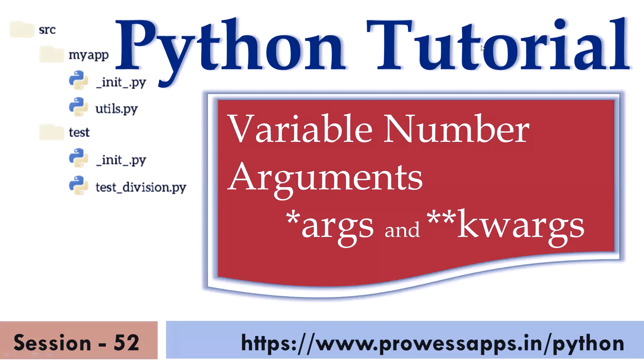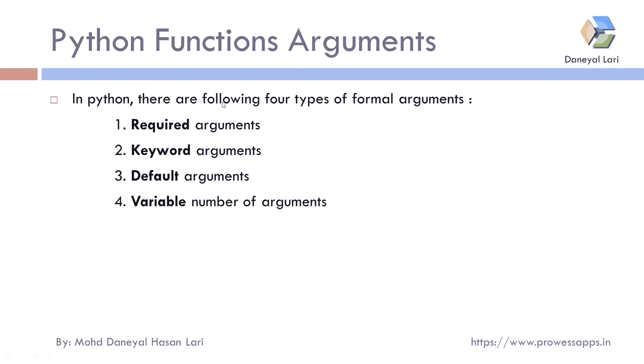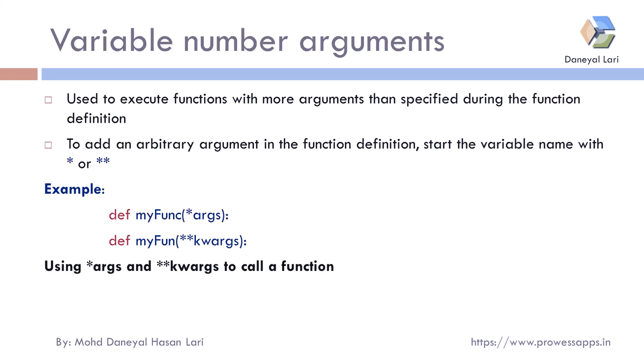Hello and welcome to the Python tutorial series. My name is Daniel Nari, and today I will discuss variable number of arguments. In the previous tutorial, we covered four types of formal arguments: required arguments, keyword arguments, and default arguments. The last one — variable number of arguments — is what we'll explore in this tutorial. It is used to execute a function with more arguments than specified during the function definition.